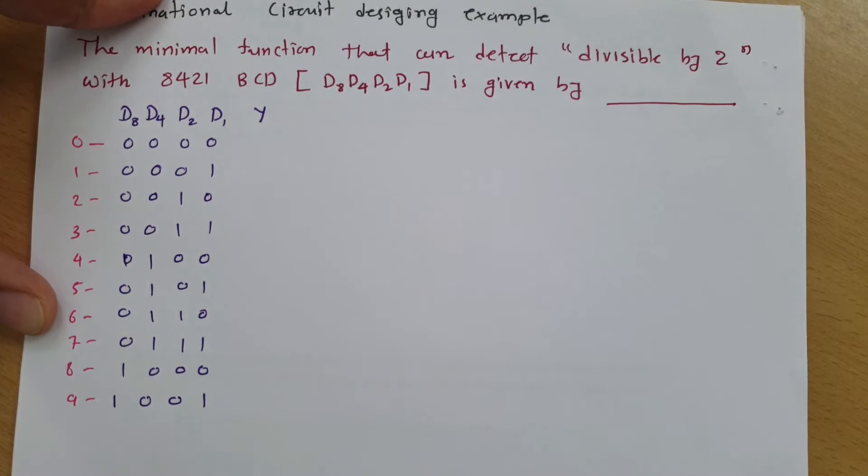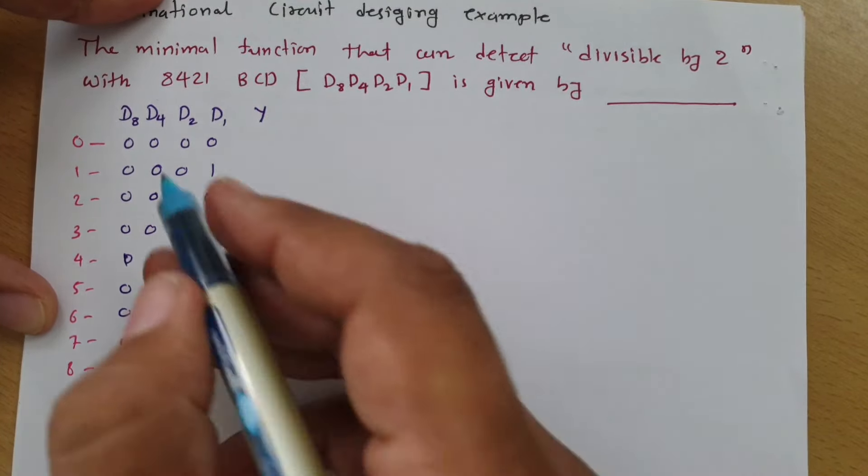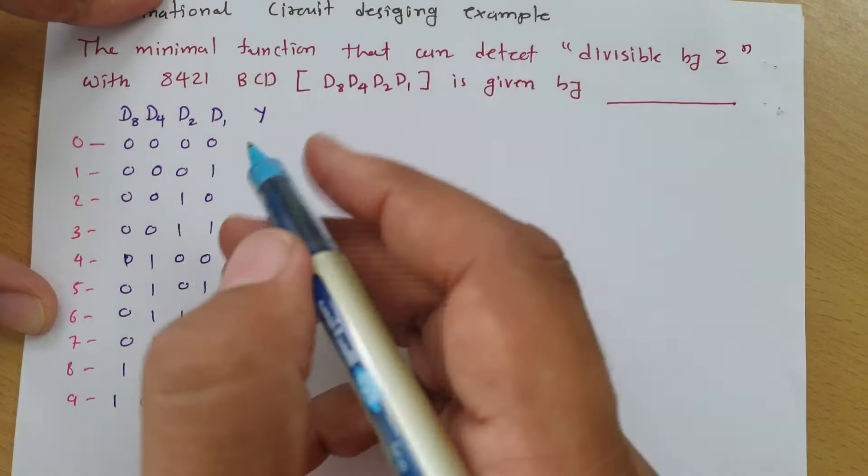Our agenda is to identify the output which is divisible by 2. 0 is divisible by 2, so output is 1. 1 is not divisible by 2, so output is 0. 2 is divisible by 2, so output is 1. Similarly, 4, 6, and 8 are divisible by 2, so output is 1. All others are not divisible by 2, so output is 0.